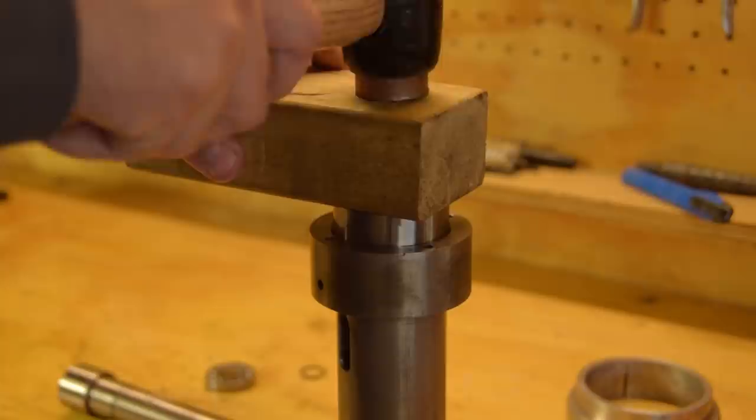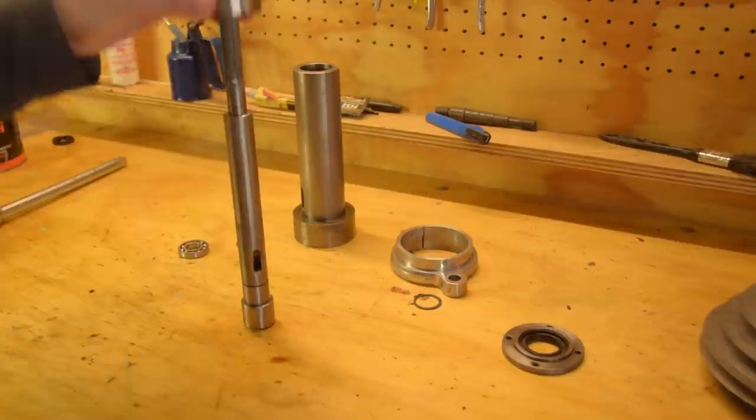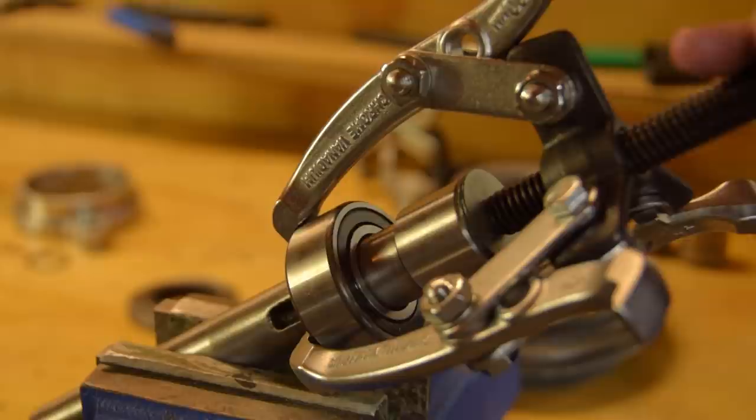I start by installing the main bearing into the bottom of the quill. This is completely wrong. The bearing has to go onto the spindle first. Otherwise installing the circlip would be a little difficult.